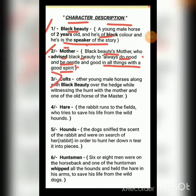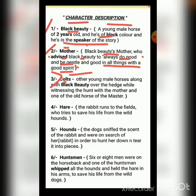The third character is about the colts. The word 'colt' means a young male horse. The main role of the colts here is that they are young male horses alongside Black Beauty, standing over the hedge — that is, near a fence or barrier.